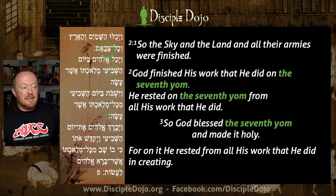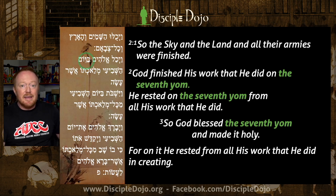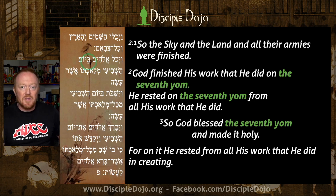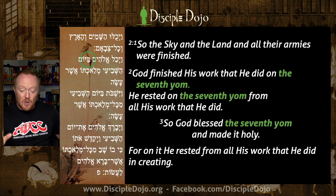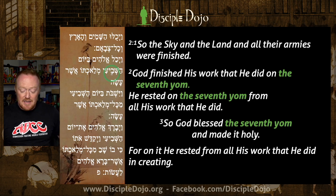Verse two: God finished his work that he did on the seventh yom. Here we have the first instance of yom ha-shevi'i. This is doubly definite. If this were just 'a day,' this would say ba-yom — on a day. But this says ba-yom — on the day. And seventh is also made definite: ha-shevi'i, the seventh day. So just like the sixth day, this is grammatically signaling even more definiteness.